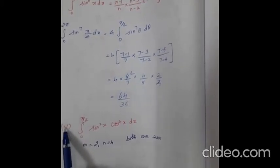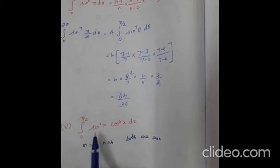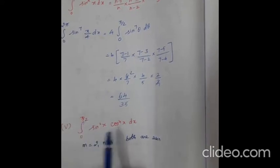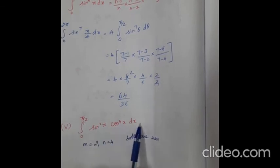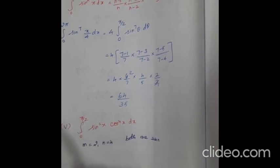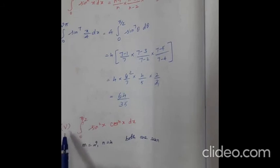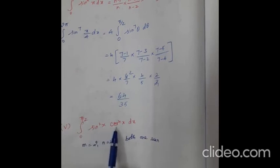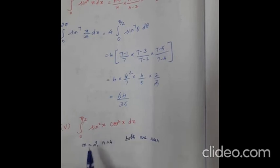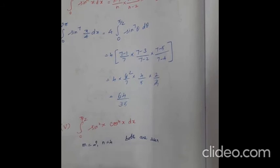Now question number 5, fifth subdivision: integral from 0 to π/2 of sin²(x) · cos⁴(x) dx. Here we have two variables, sin and cos. Up to now I taught only one term — either sin or cos, with n even or n odd. Here we have both. m = 2 and n = 4; both are even, so we apply the second formula.